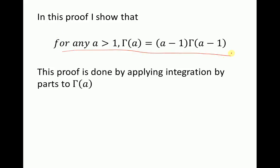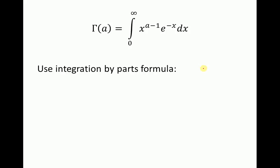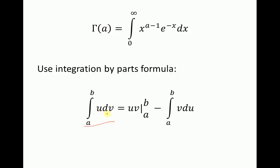This is what I show in this proof, and it will be done by applying integration by parts to the gamma function. Let's use the integration by parts formula. We know that an integral from a to b of u dv can be expressed as u times v evaluated from a to b, minus the integral from a to b of v du. Now we just need to decide what will be u and what will be v.